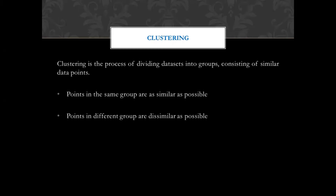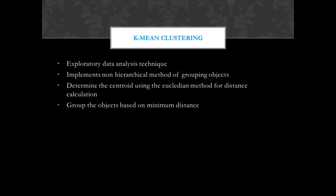We have two key points: first, points in the same group should be as similar as possible — that means within one cluster all data items are similar. Second, points in different groups should be as dissimilar as possible — so if we take two clusters and compare them, the data points should be dissimilar. That is the main aim of clustering.